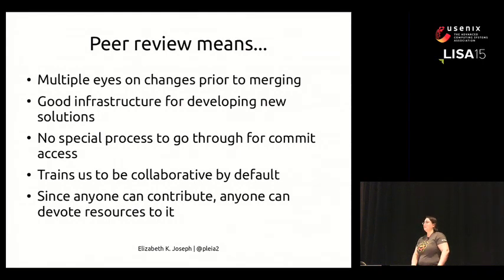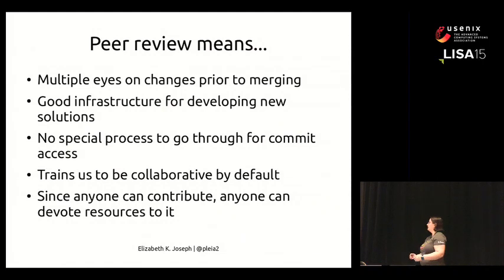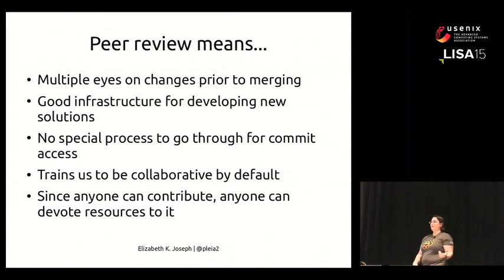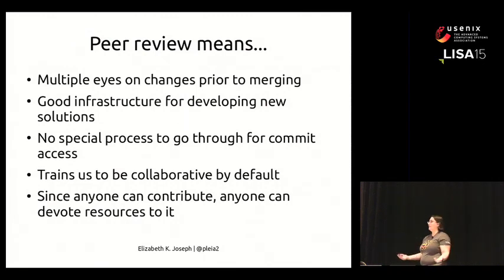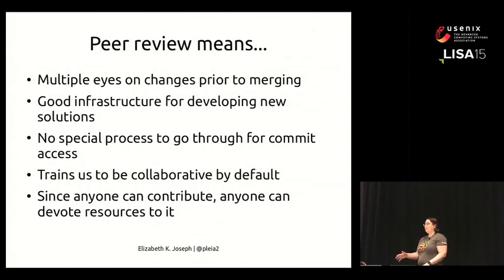Since anyone can contribute patches, any company can devote engineers to work on our team. If you want to add a new feature, one example: someone at Red Hat wanted to add an Asterisk server to the OpenStack project. We said, 'if you want that, you can come build it.' A couple of engineers from Red Hat spent a few weeks and brought up an Asterisk server. Companies will come in and devote engineers for a few weeks to build something, and then every time it breaks we call them again — it allows companies to directly influence our infrastructure by giving us more manpower.